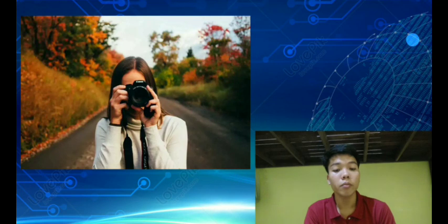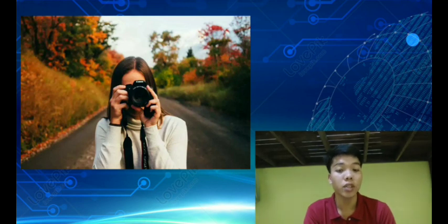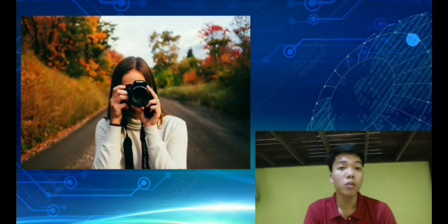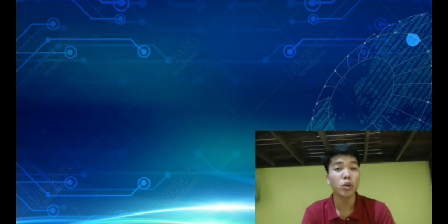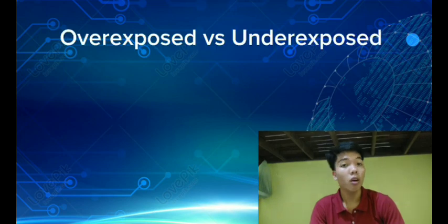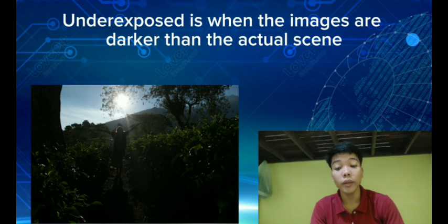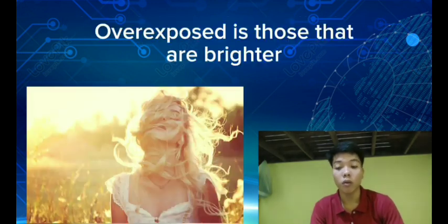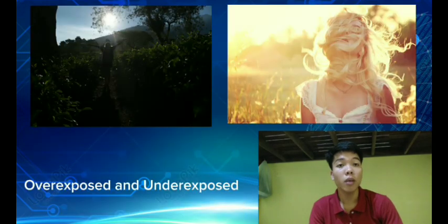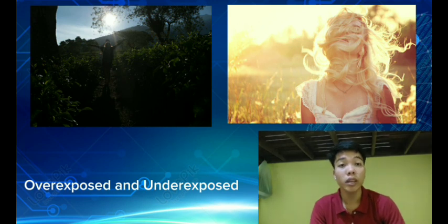To capture an image with a determined brightness when you shoot, a perfectly exposed photo captures all the details in the highlights and shadows. When we say underexposed, it refers to images that are darker than the actual scene, while overexposed refers to images that are brighter than the actual scene.